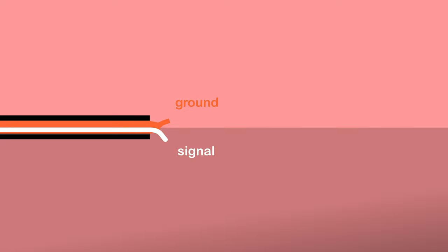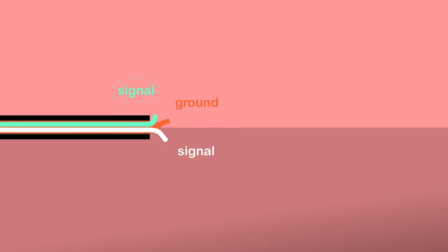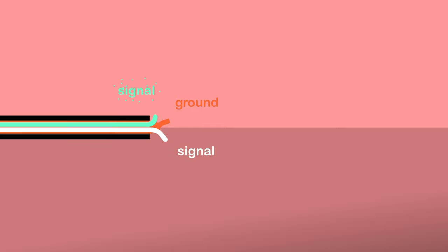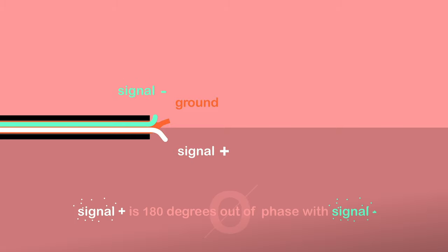This kind of connection is called a mono unbalanced connection. If we add an extra signal wire to this cable and use it to transfer another unrelated signal, the connection becomes a stereo unbalanced connection, like the connection you find on your headphones. If instead we use that second signal wire to transfer an inverted copy of the first signal — also referred to as inverse phase or polarity — we can create a balanced connection.